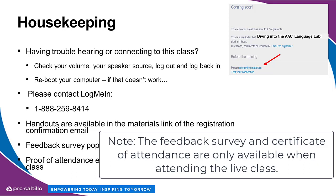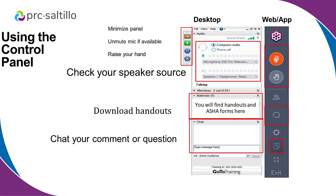We want to go over a little bit of housekeeping first. Technical difficulties are not the norm, but if you have trouble hearing or connecting, check your volume and speaker source. You can log out of GoToTraining and log back in, or restart your computer. If that doesn't work, contact LogMeIn. In the GoToTraining window, the audio tab lets you check that the right sound source is selected.